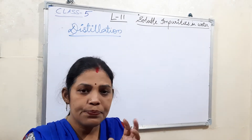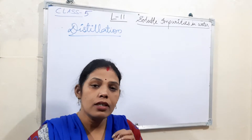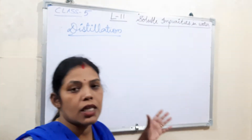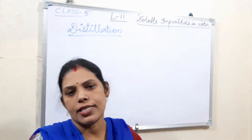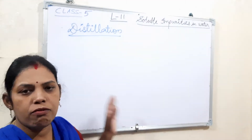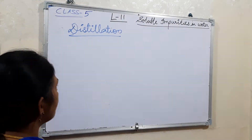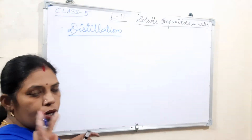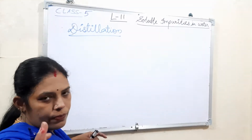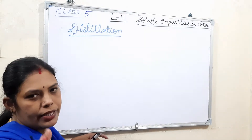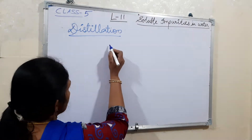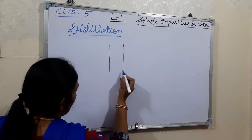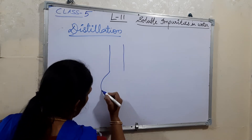Sometimes gases mix with the rain water and form nitric acid and sulfuric acid. That is actually known as acid rain. Now let us see how distillation is done in the laboratory — for that, first take a round bottomed flask.